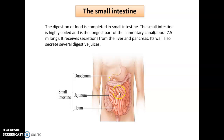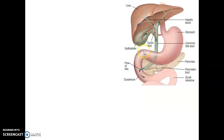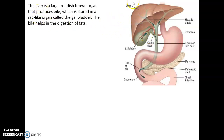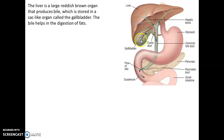Various organs attach to the top part of the small intestine. The first is the liver. The liver is a reddish-brown organ that produces a juice called bile juice, which is stored in a sac-like structure called the gall bladder. This bile juice secreted by the liver and stored in the gall bladder helps in the digestion of fat.